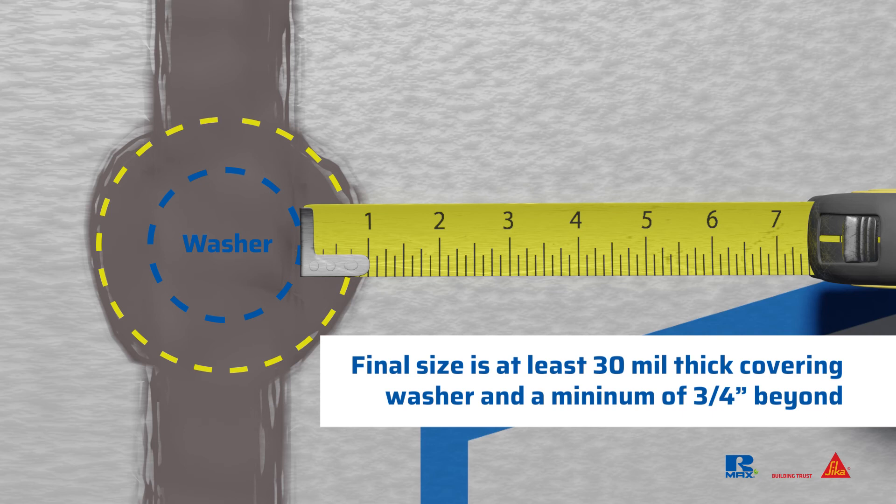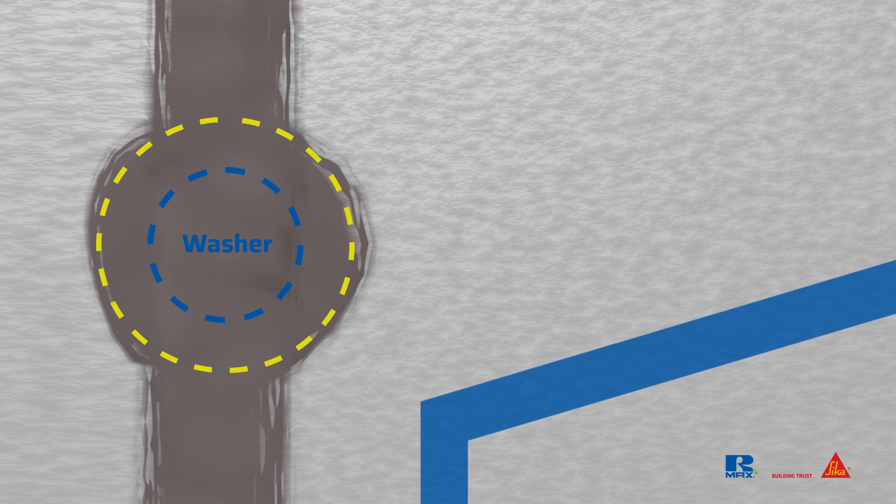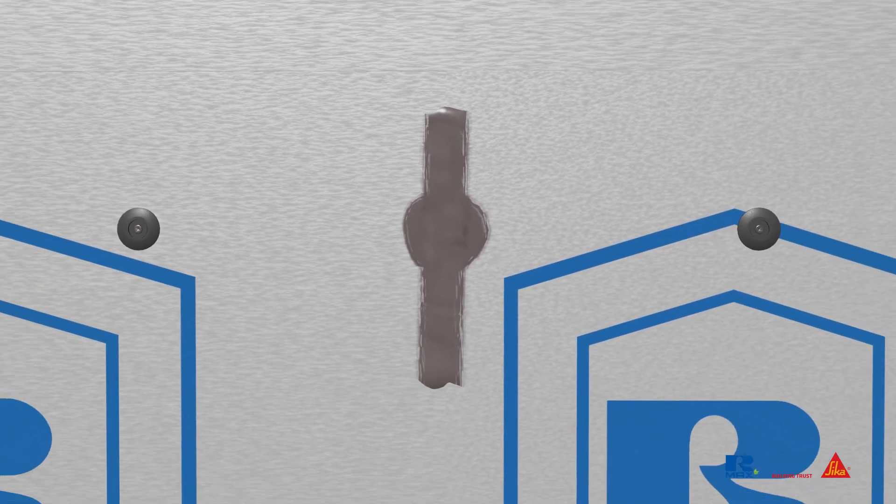If needed, add material, make adjustments or corrections to ensure proper width and thickness. With both the thickness and width verified, review the sealant to ensure that there are no pinholes in the sealant. If there are, re-smooth the joint sealant.